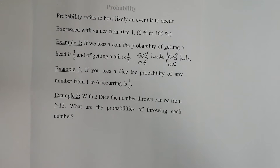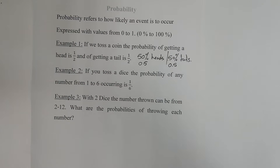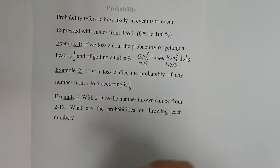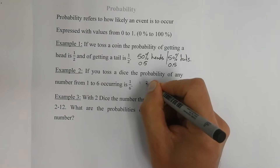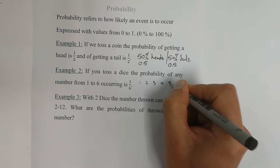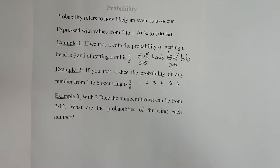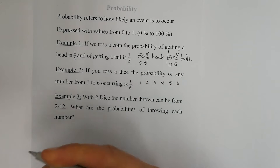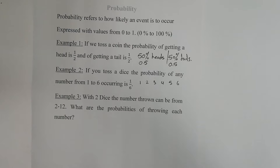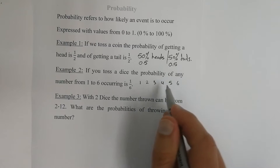Let's look at another example — throwing a dice. What's the chance of getting the numbers 1 to 6? We know there's a 1, 2, 3, 4, 5, and 6. Those are the different numbers we can obtain. Essentially, in an unbiased dice, there's a possibility of each number happening 1 out of 6 times.